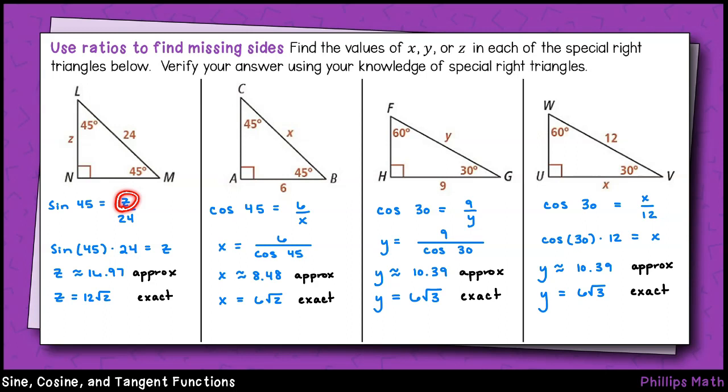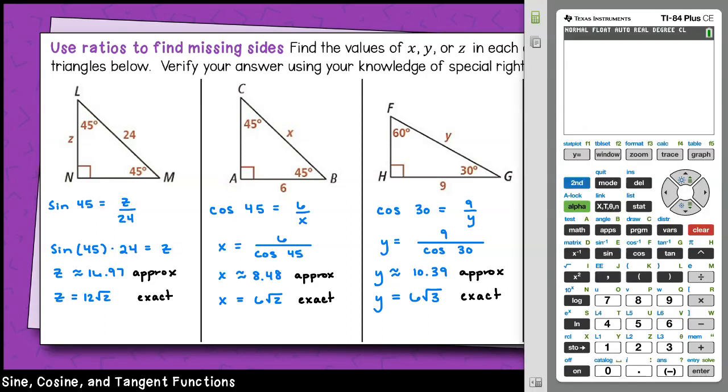So sine of 45 degrees will be z divided by 24. To solve for z here, I'm just going to multiply both sides of the equation by 24. Then using our calculator, I've got sine of 45 degrees times 24 equals approximately 16.97.